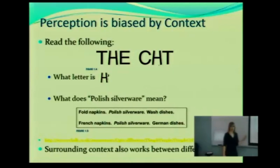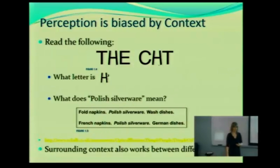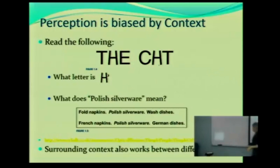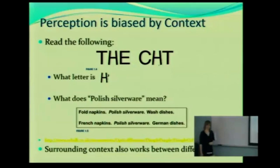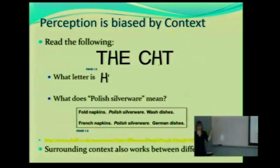What this is showing us is that our perception is biased by the context. What is the context we're seeing something in? Here the context is we're all familiar with the word 'the,' and here the context is we're all familiar with the word 'cat.' We're going to talk about that a little bit later in the semester in terms of details, because that's part of it — it's not all of it.